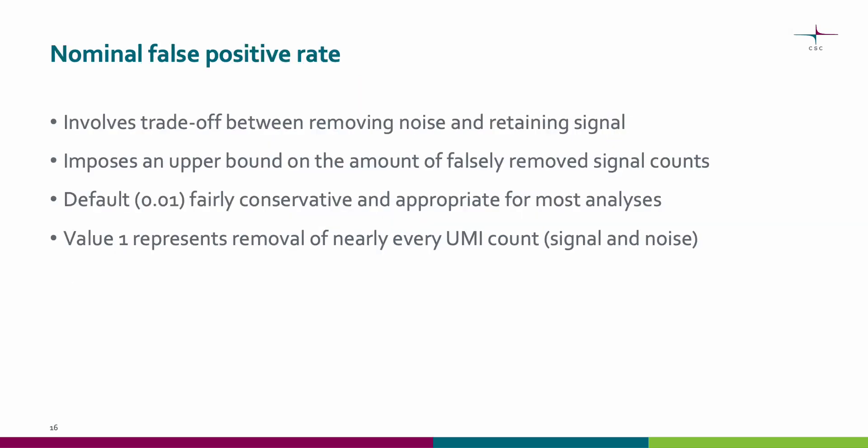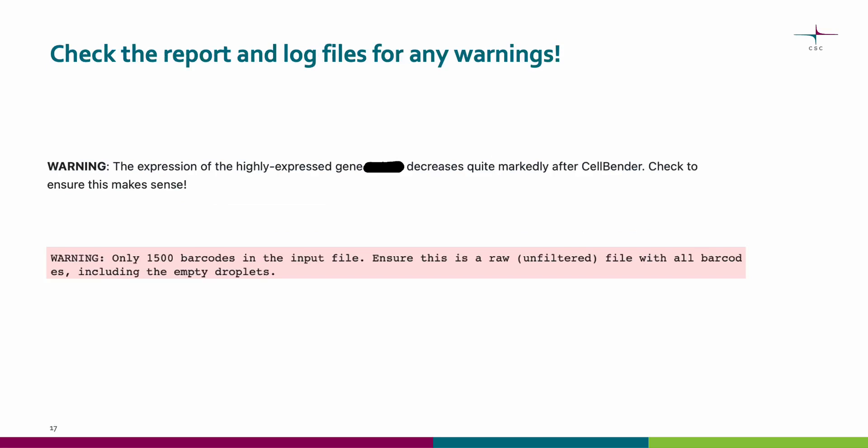Finally, we will take a look at the last parameter called nominal false positive rate. Any noise removal algorithm involves a tradeoff between removing noise and retaining signal. The nominal false positive rate imposes an upper bound on the amount of falsely removed signal counts. The default value is fairly conservative and appropriate for most analyses, but you can modify this based on your dataset. A value of one represents removal of nearly every UMI count, meaning that almost all signal and noise are removed. Please remember to check for any warnings in the report or log files. For example, the report file issues warnings if it seems that you have not used the raw feature barcode matrix as input.